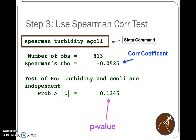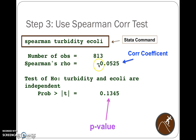We use the Spearman correlation test. The command is: spearman turbidity ecoli. That's the command and you hit enter. There are 813 pairs of data. We get a correlation coefficient of negative 0.05, which means as turbidity goes up, E. coli goes down slightly — not exactly what we would expect. The correlation coefficient is really close to zero, so if there is a correlation it's pretty weak. This would be called an inverse or negative correlation if it's there.